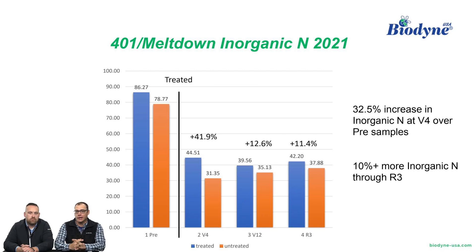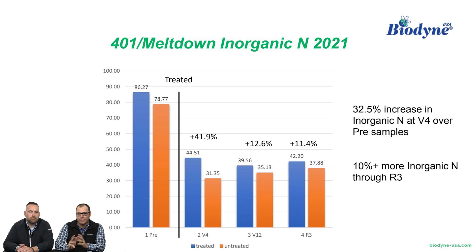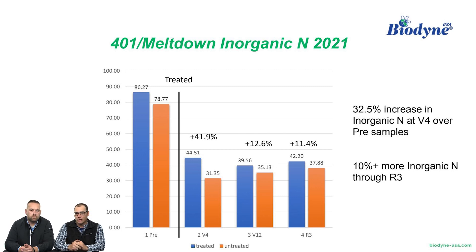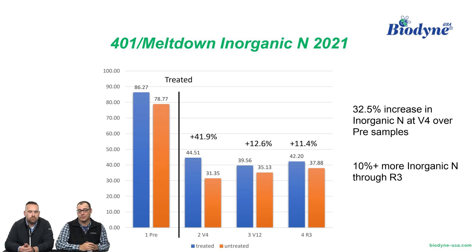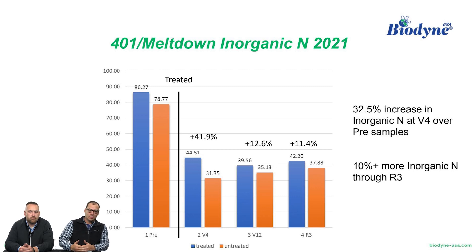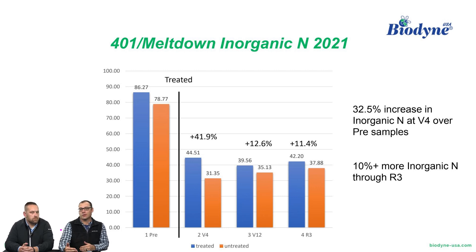Looking at 401 Meltdown inorganic nitrogen data from 2021: at the beginning, the treated area already had more inorganic nitrogen than untreated. At V4, we've got about 42% more inorganic nitrogen. At V12, we've got about 12.5% more. At R3, we've got 12% more. Our biology is working throughout the growing season — we've seen this with phosphorus, we've seen this with potassium.